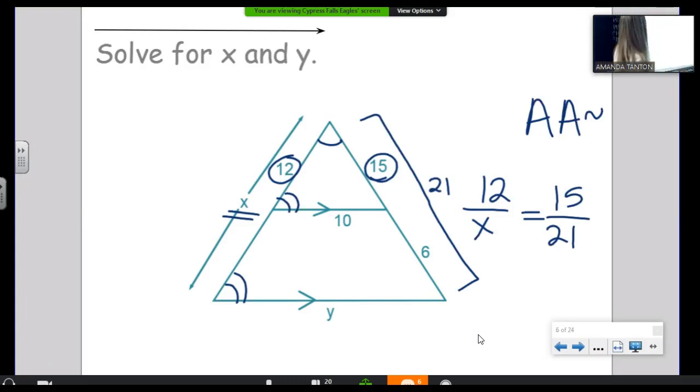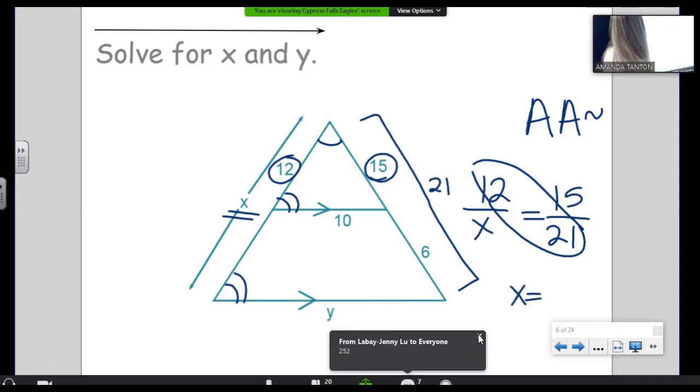All right. Let's do it. Cross-multiply 12 times 21, divided by 15. Yell it out. 16.8. 16.8. Okay. It's not a scale factor or anything, so Ms. Tanton's going to totally let you keep it as a decimal.